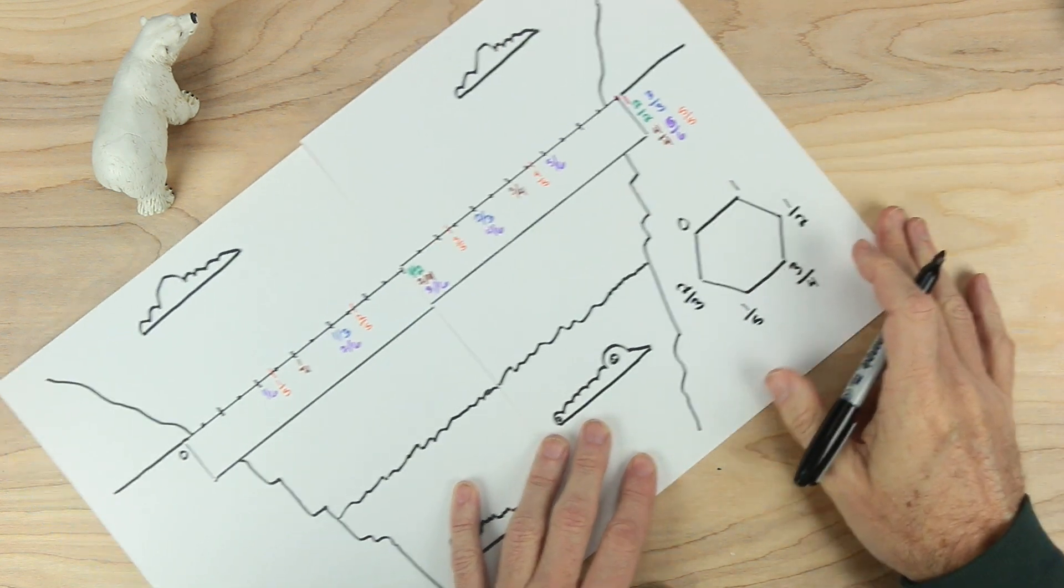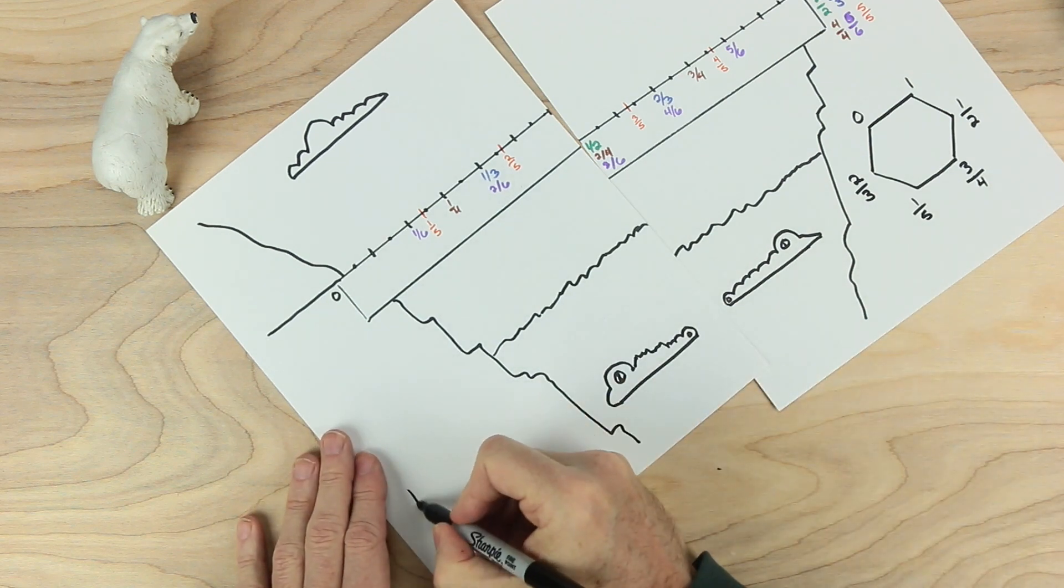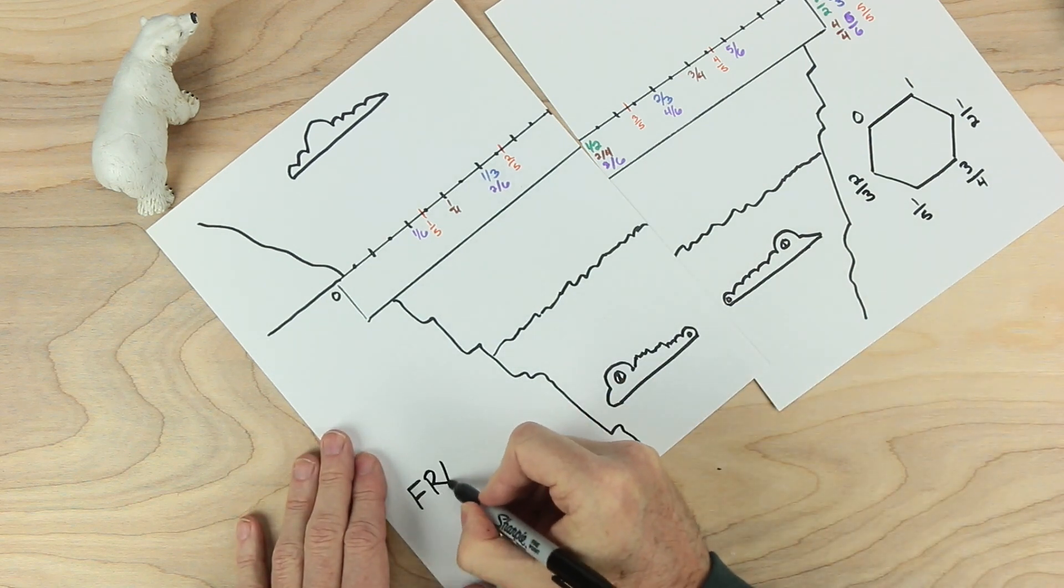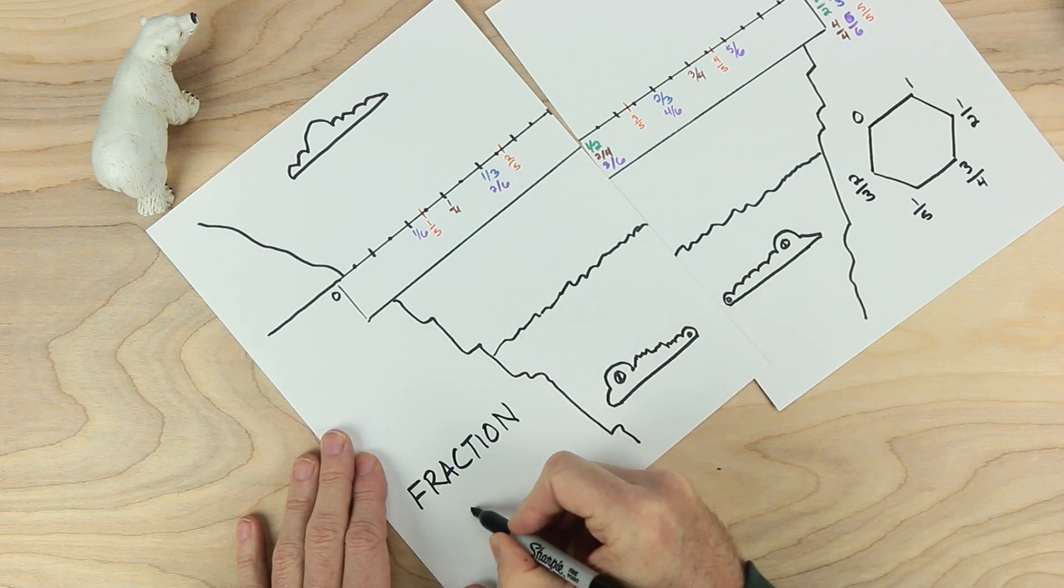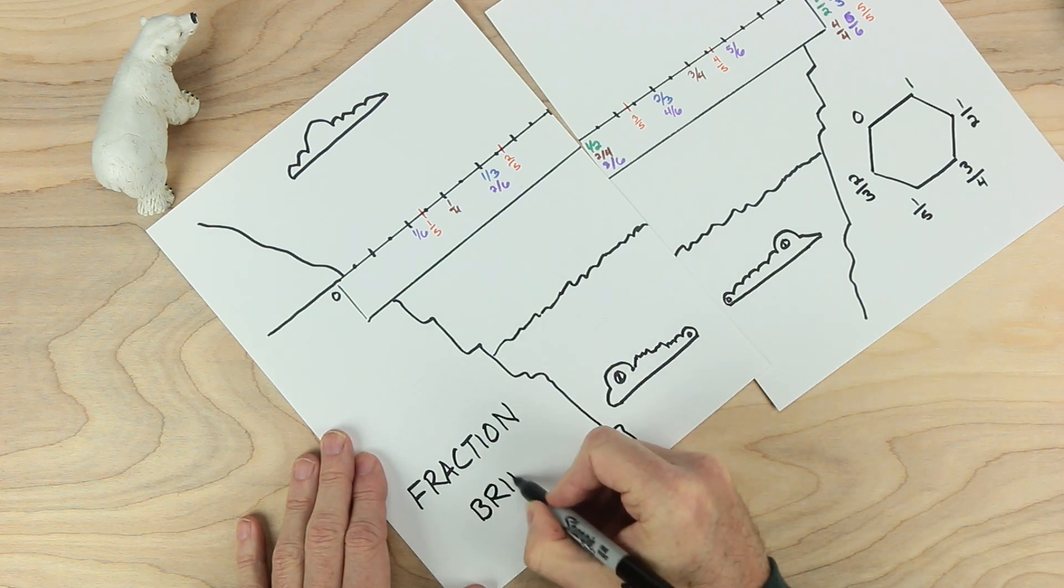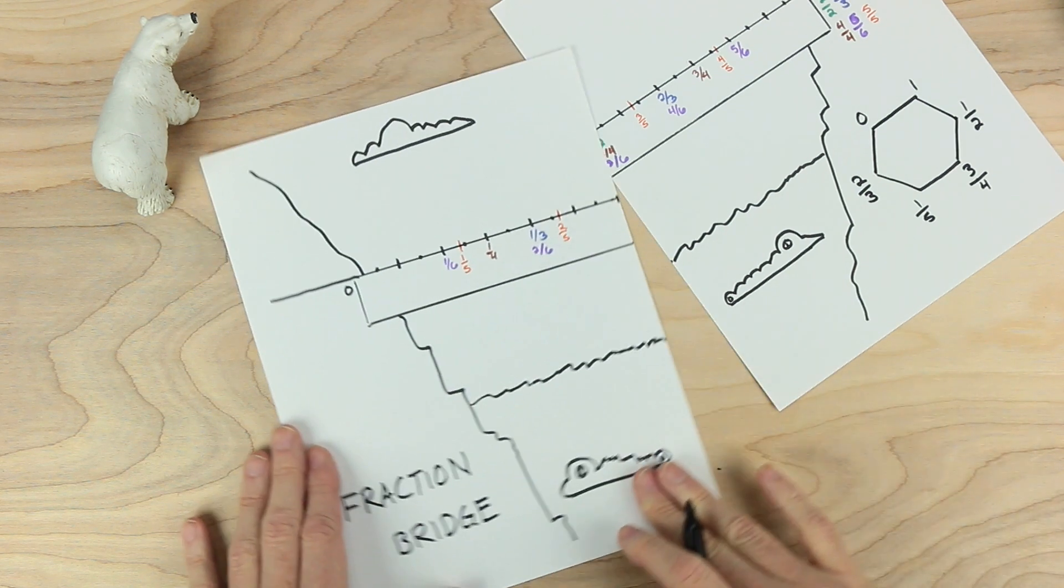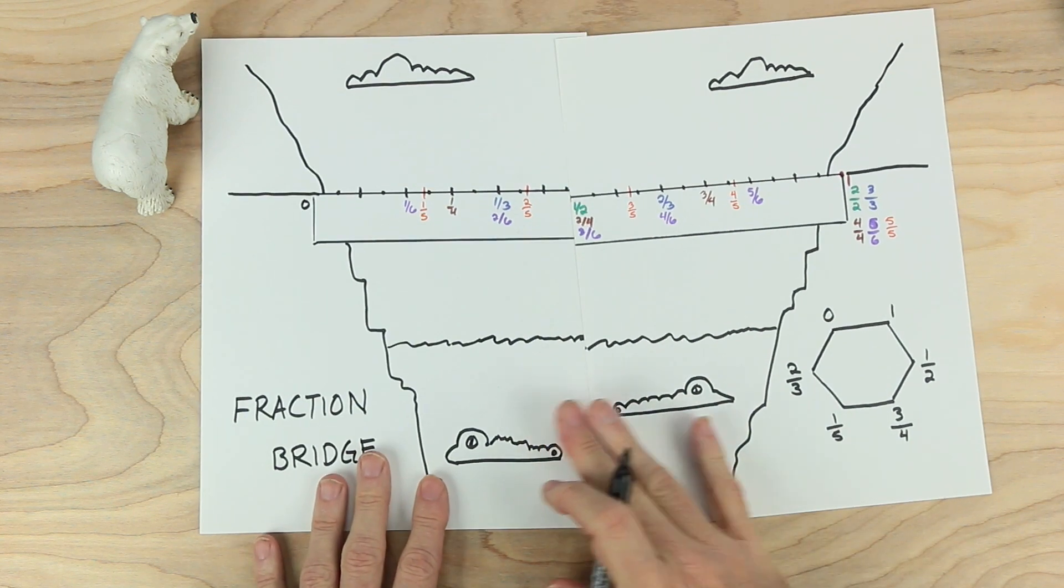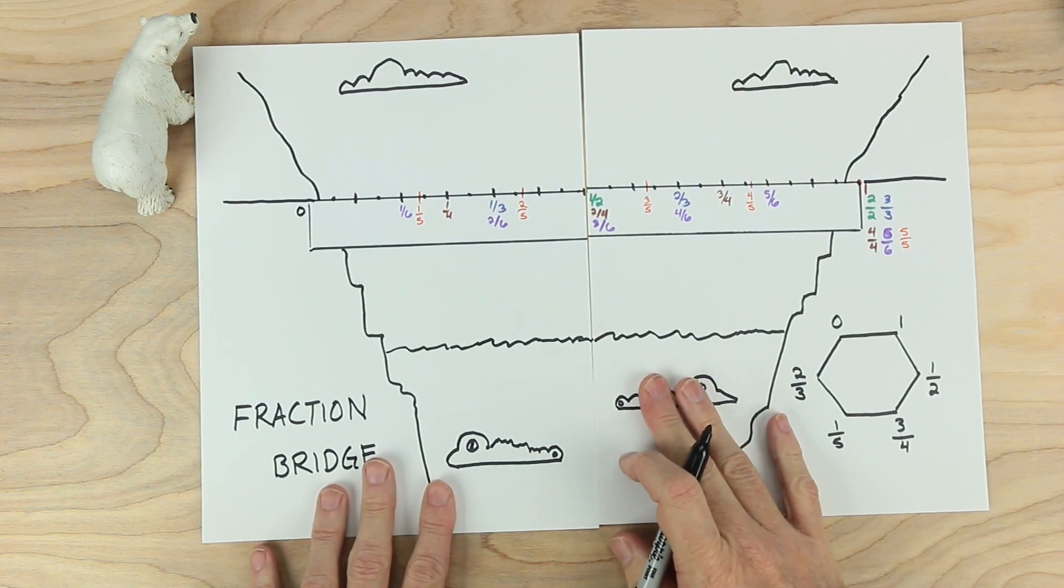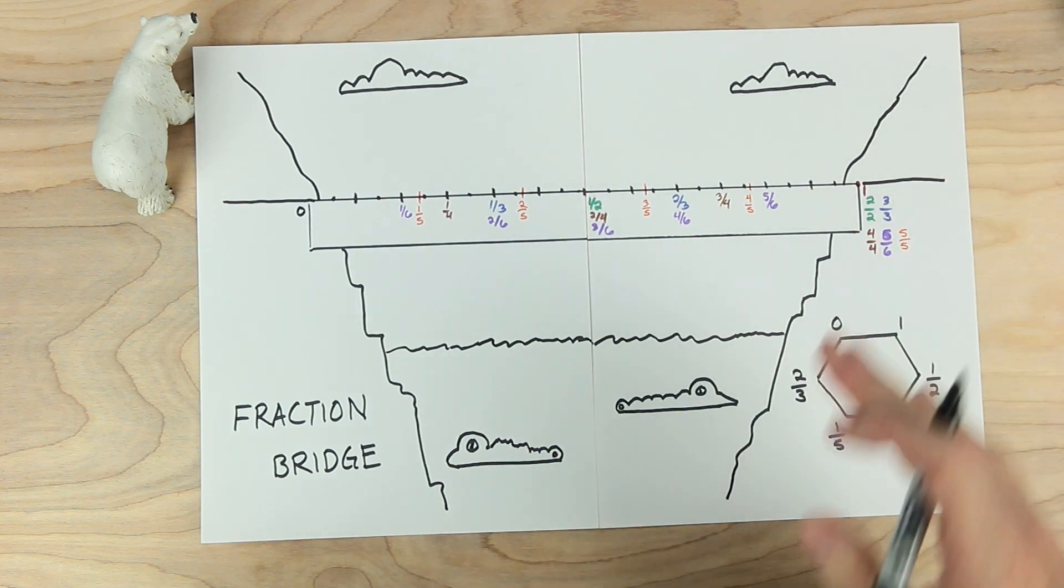And we want to give this game a name. And I'm going to call it Fraction Bridge. That's a great game board. Let's set it up so we can play it. Almost there. Make it a little more straight. There we go.